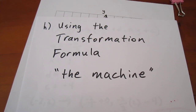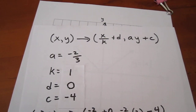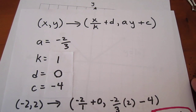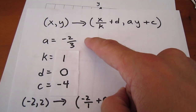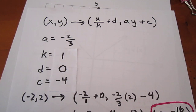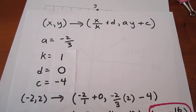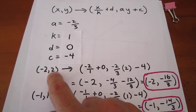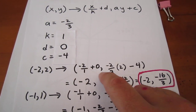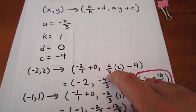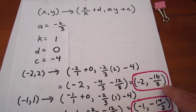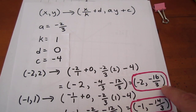Perhaps a slightly quicker method than the chart is to use the transformation formula, also known as the machine. This formula maps x, y onto x over k plus d, comma, ay plus c. We already know our a, k, d, and c values, so we plug each one of our points from the parent function through that formula. The point negative 2, 2 maps onto negative 2 over 1 plus 0, comma, negative 2 thirds times 2 minus 4. When you follow all the math, you get a new image point of negative 2, negative 16 thirds.